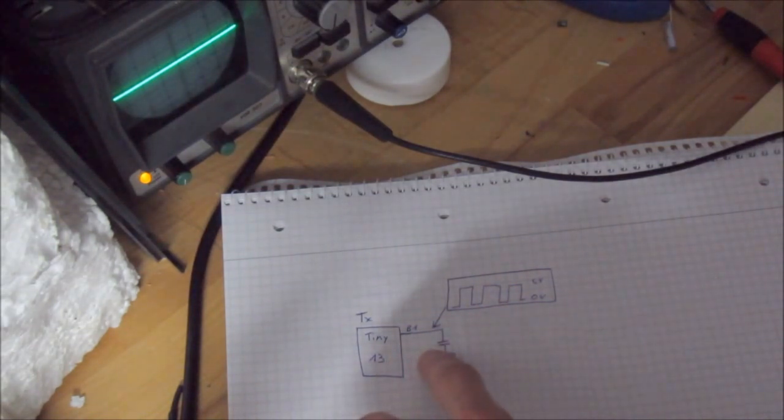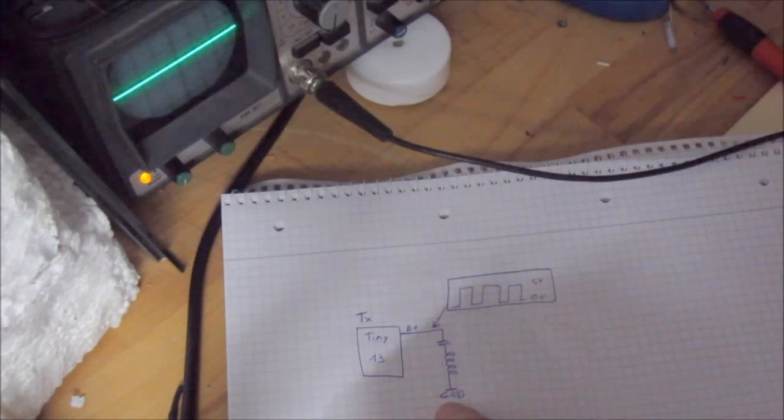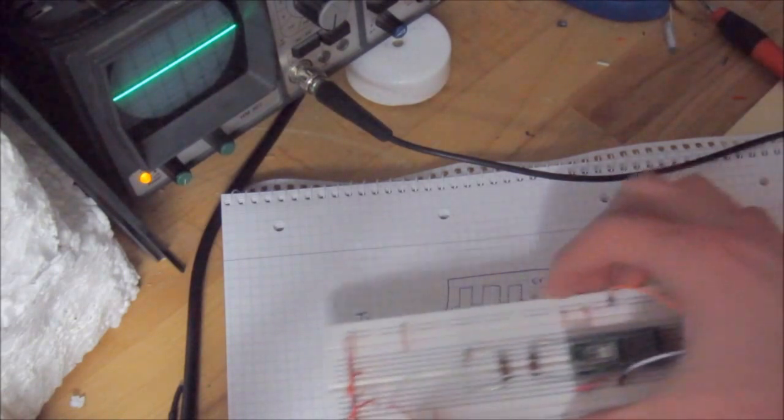And here we have a capacitor and a small inductor that is connected to the capacitor and to ground. And in the capacitor there is generated a sine wave. So we can see this in my oscilloscope.